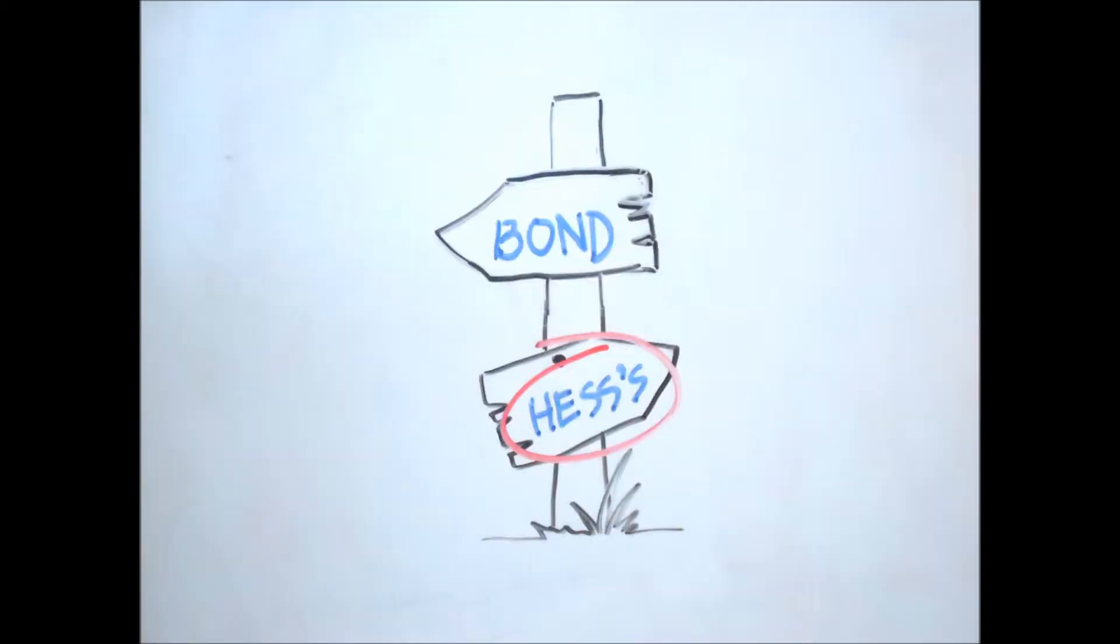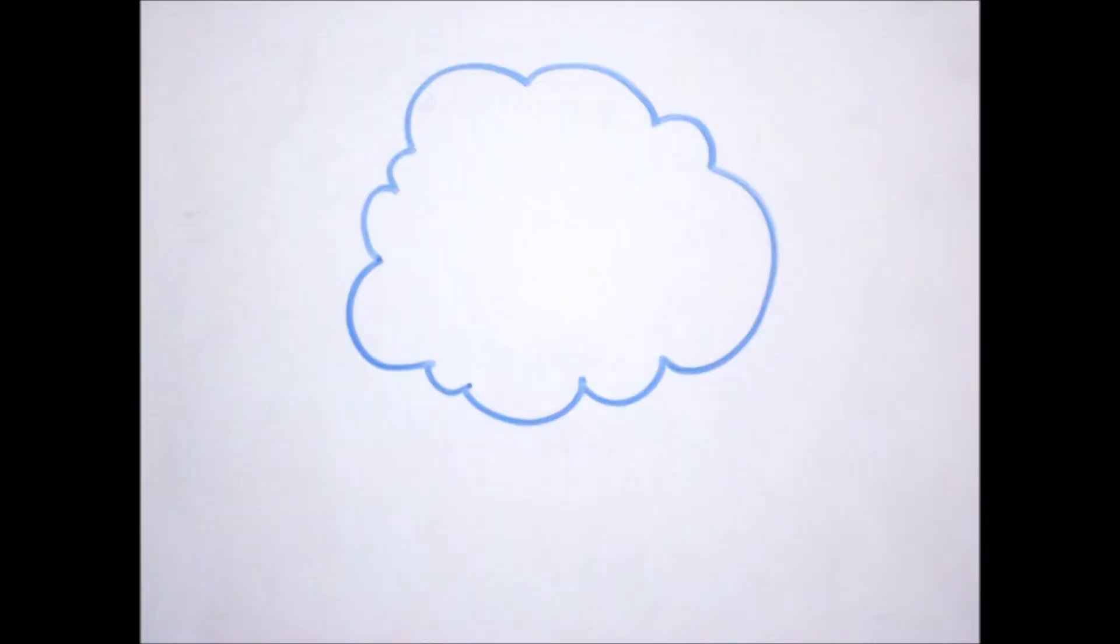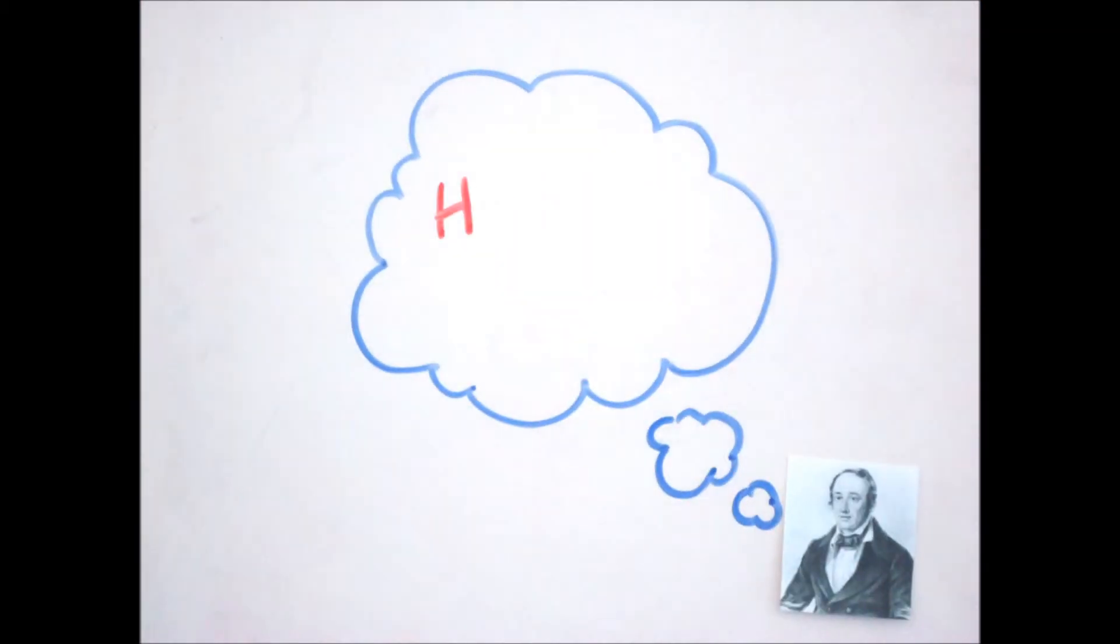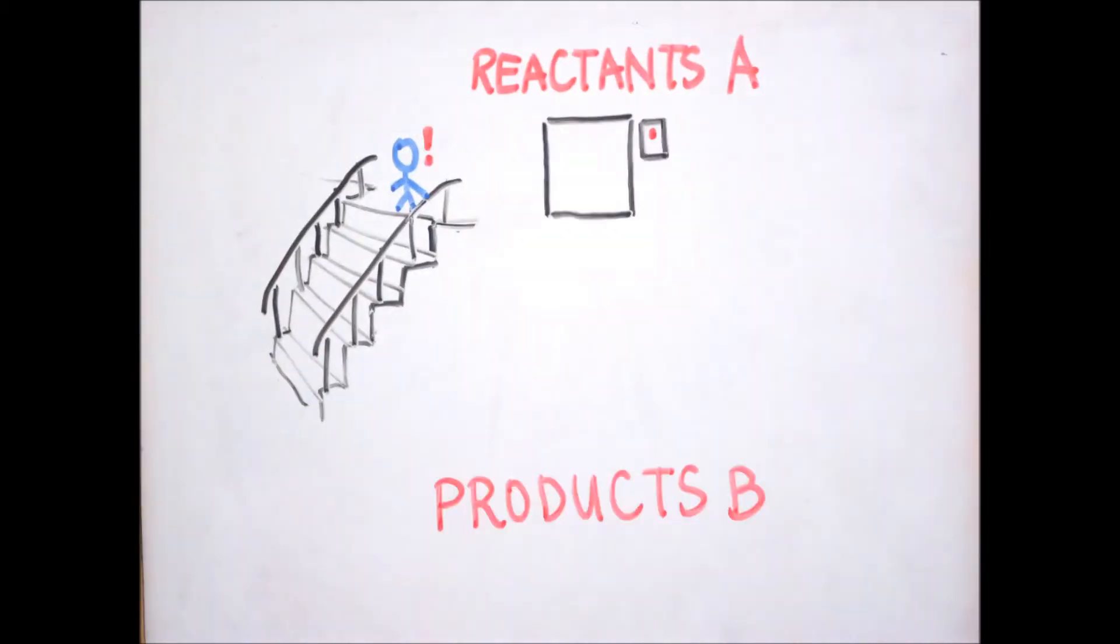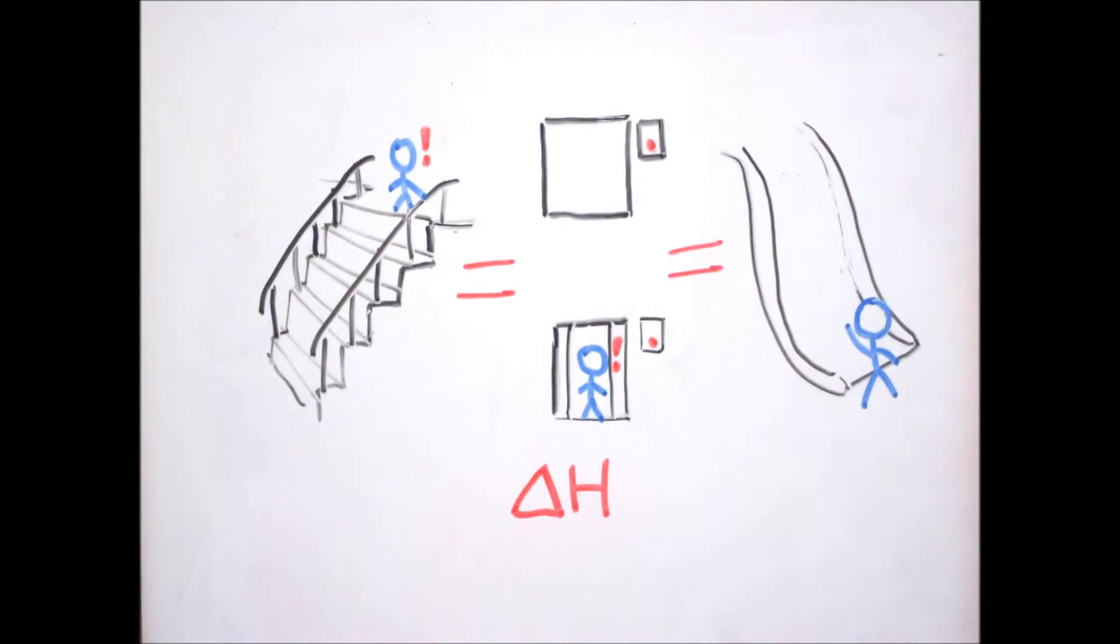Another way to find the change in enthalpy of a chemical reaction is with the idea proposed by Germaine-Henry Hess, known as Hess's Law. It states that the enthalpy change of a chemical reaction is independent of the intermediate steps between the initial and final states. In other words, it doesn't matter how you get from reactant A to product B, the change in enthalpy is still the same. To further explain this concept, let's look at the equation for the combustion of kerosene.